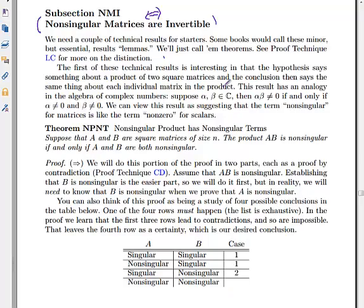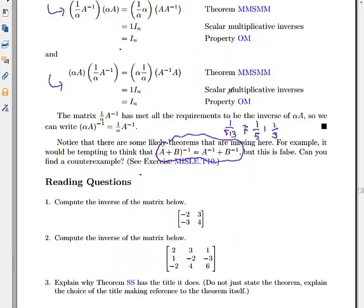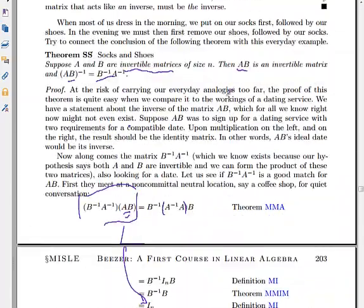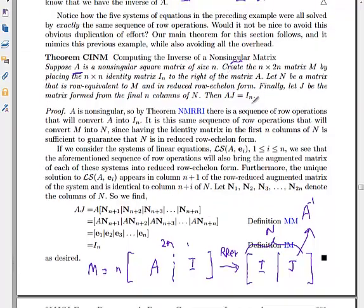This section is a continuation of the previous section. We showed that if you have a non-singular matrix, you can compute a matrix J such that that non-singular matrix times J is the identity. Theorem CINM says if you have a non-singular square matrix, you can find a matrix J that multiplies A on the right and gives the identity. So we can call J a right inverse of A.